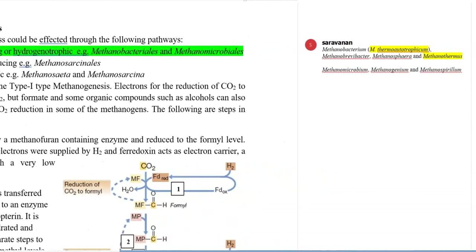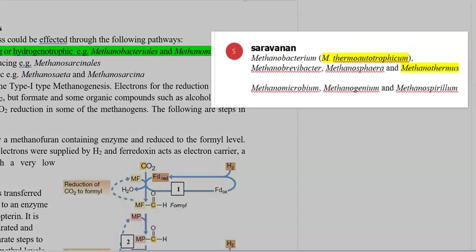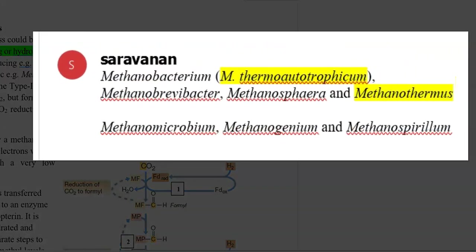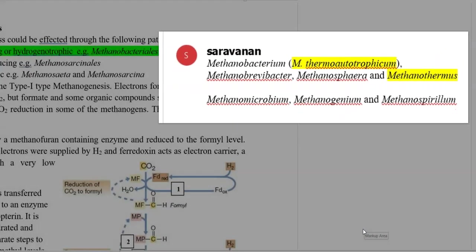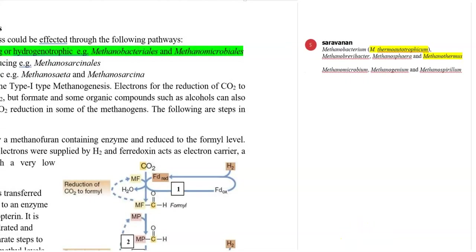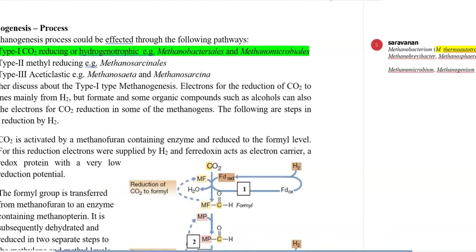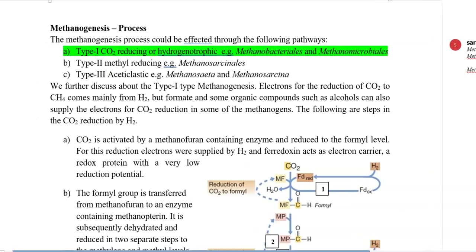This could be effected by bacteria that belong to the order Methanobacteriales as well as Methanomicrobiales. The genus includes Methanobacterium, mainly Methanobacterium thermoautotrophicum, then Methanobrevibacter, Methanosphaera, and Methanothermus. These are important groups of bacteria under the category of hydrogenotrophic methanogens.